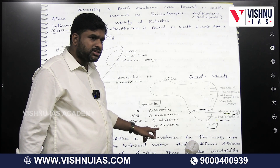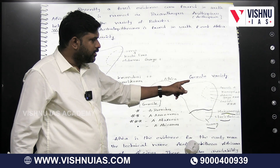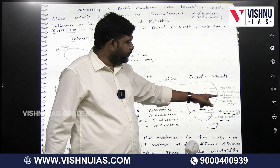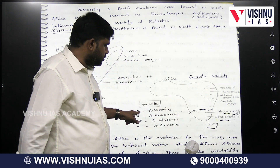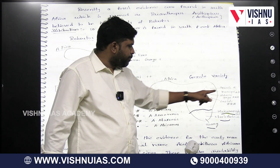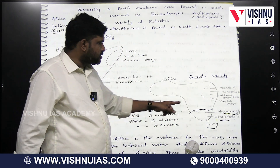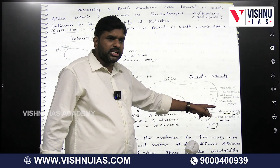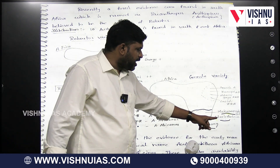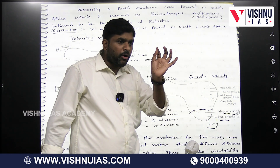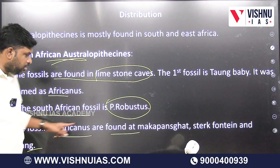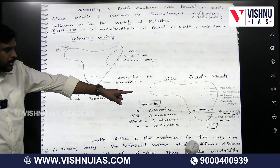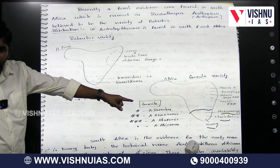On the map, the Gracile varieties are marked by star symbols. Aramis is the location for Ramidus. Kanapoi is the location for Anamensis. Olduvai Gorge and Laetoli — marked with three stars — are locations for Afarensis. Makapansgat, Sterkfontein, and Taung — marked with pointer symbols — are the locations for Africanus.